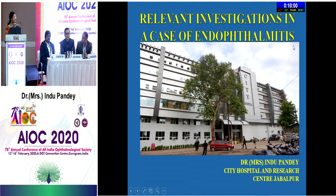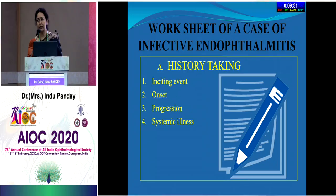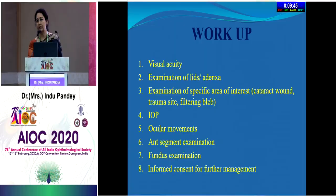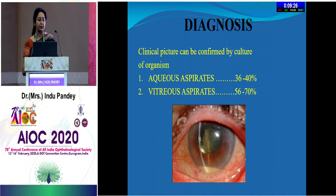Dr. Indu's talk covers laboratory investigations for endophthalmitis. History taking is paramount, and workup should be treated as an emergency since pathogens and toxins rapidly destroy ocular structures. Once a clinical diagnosis is made, identification of the organism is the next step. The best samples are aspirates from the vitreous and aqueous — vitreous yields 56 to 70% positivity, while aqueous yields 36 to 40% positive isolates.